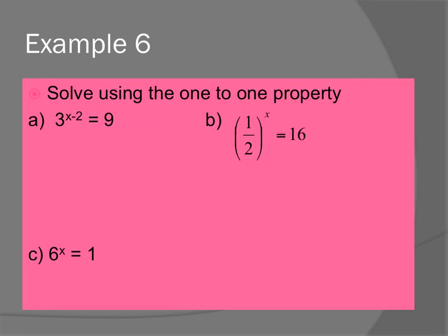Obviously, they get to be a little more complicated than that, but that's the general idea behind one-to-one property. Standardized has a lot of these types of problems, right? You have to change one base to become the other, and then once you get the bases to be the same, the exponents get equal to each other.